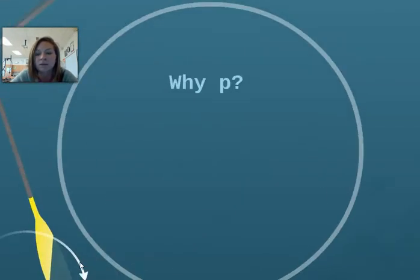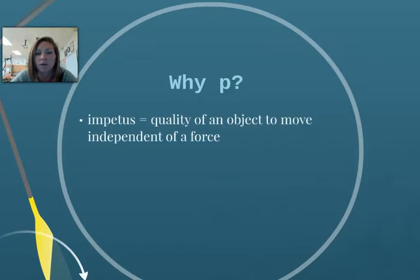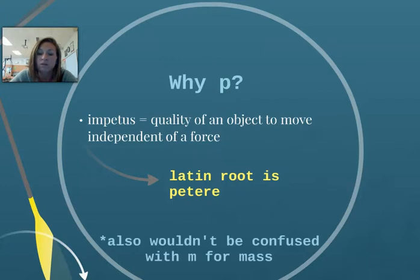Now, you might be wondering why P to designate for momentum. Well, impetus is a quality of an object to move independent of a force, and that was Newton's term. Now, the Latin version of that word is peter. So that's where the P comes from. And so we use that also so it's not confused with M for mass. There you go.